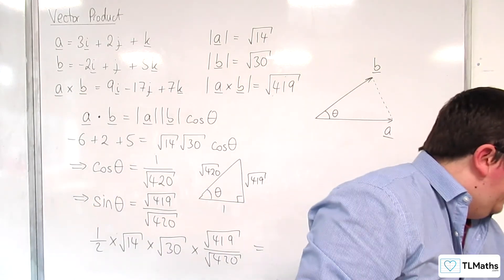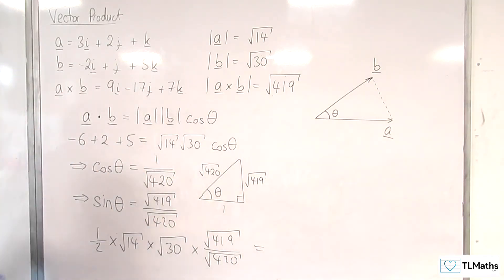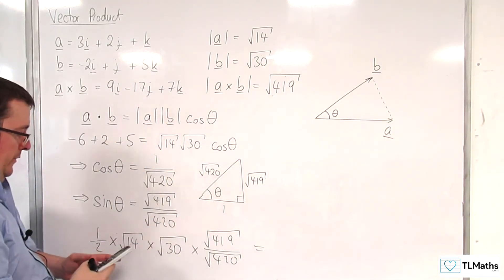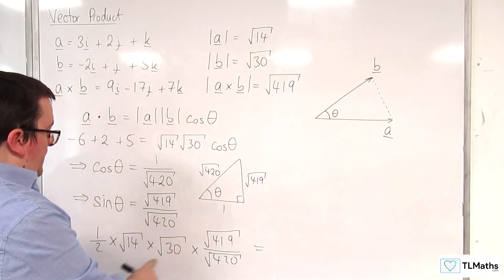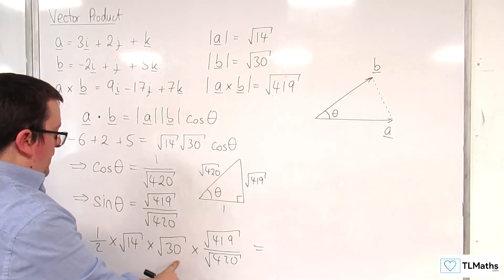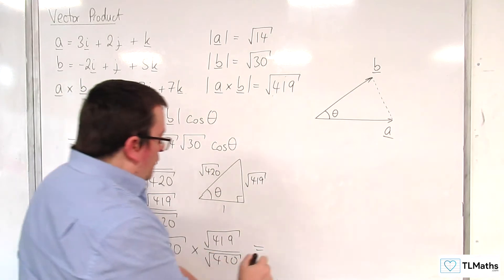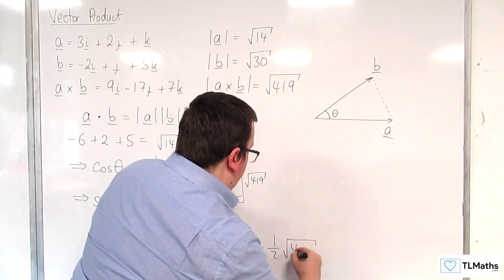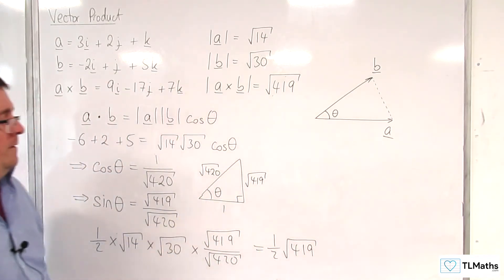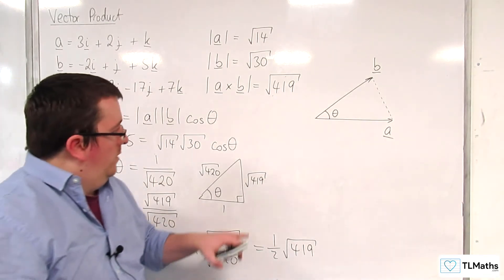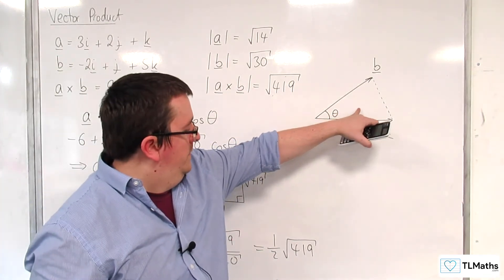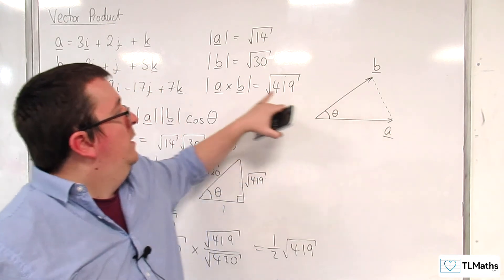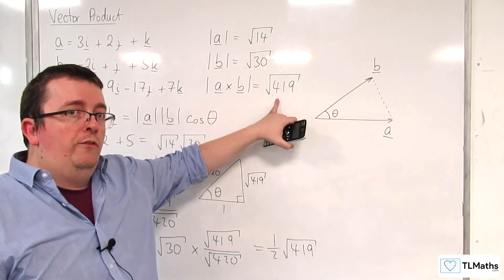So, what do we get here? Now, 14 times 30 was 420, so that's root 420. So, we've actually got 1 half of root 419 here. So, this area is half of the length of the vector product.